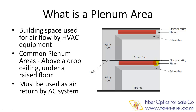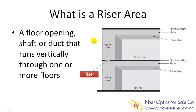In most buildings, the area above a drop ceiling or under a raised floor can be a plenum area, but only when they are used by the air conditioning system for air return. If it is not used for air return, then it is not a plenum area. The picture shows where plenum areas typically are. Now let's check what is a riser area. The riser area is a vertical shaft used to pass cable between two floors, as shown in this picture.